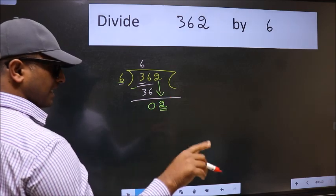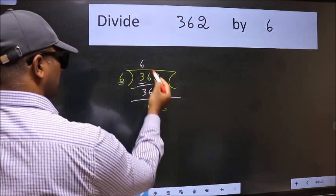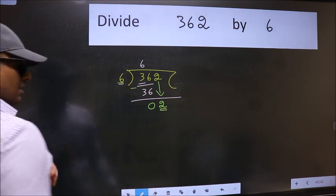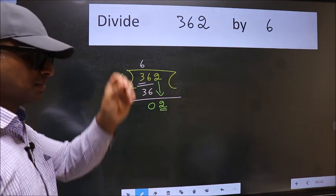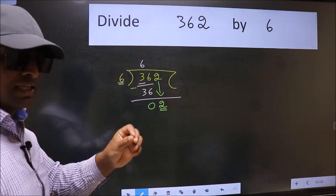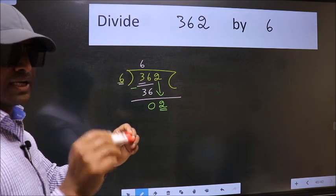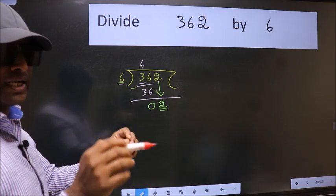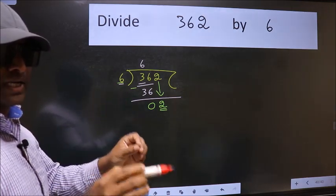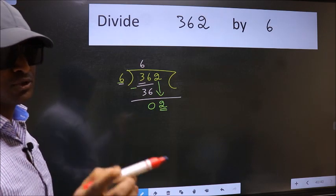And in the same step, you want to put dot, take 0, which is wrong. I repeat: bring down the number and also put dot, take 0. Both at the same step, you should not do.